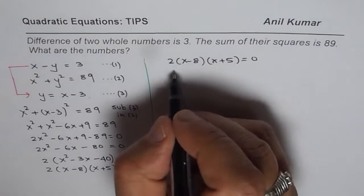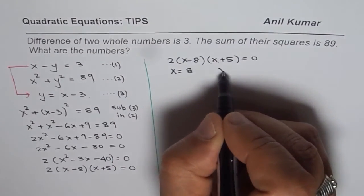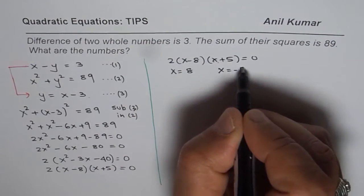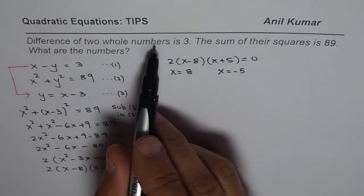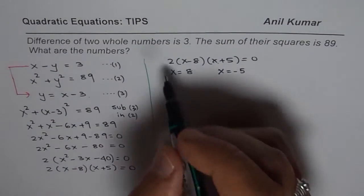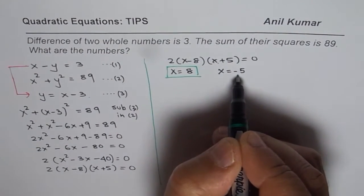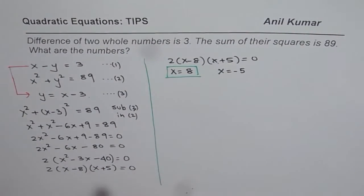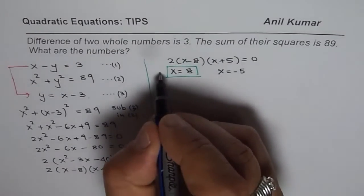So the equation for us is 2 times x minus 8 times x plus 5 equals 0. If I equate this to 0, I get x equals 8. And if I equate that to 0, I get x equals minus 5. Since we are looking for two whole numbers, we are looking for positive numbers. So we will go for x equals 8. x equals minus 5 is not a whole number, it is an integer. So x equals 8 is one of our solutions.